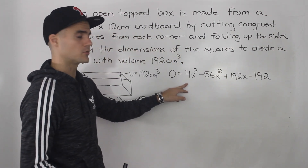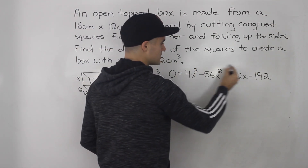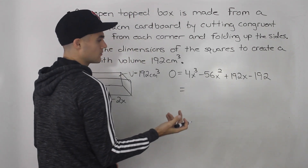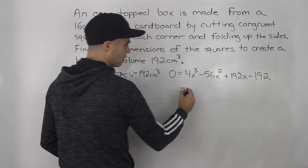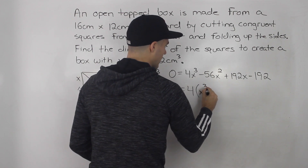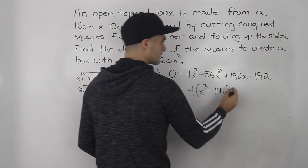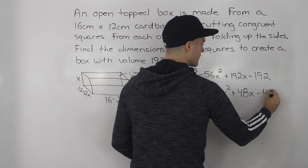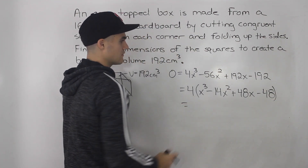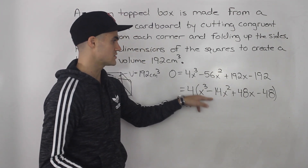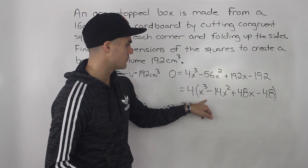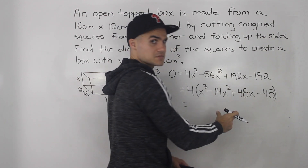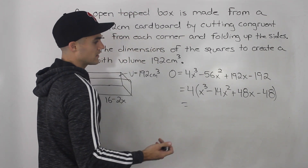Now we just have a polynomial equation to solve by factoring the right side. First, check if we can take anything out — we can factor out a 4, giving us x cubed minus 14x squared plus 48x minus 48. We can check factoring by grouping, but taking x squared from the first two terms gives (x minus 14) and taking 48 from the last two gives (x minus 1), so grouping won't work. We'll need to use the factor theorem.